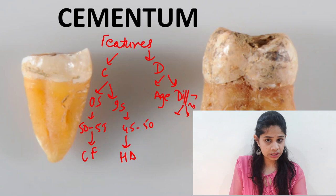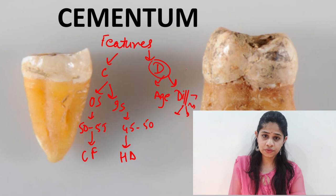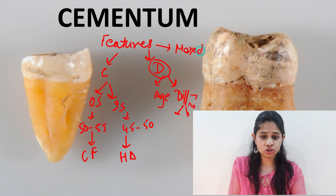The third unique feature of cementum is that it is mesodermal in origin. To understand what we mean by mesodermal, we need to understand the development of the cementum, which comes under the process of cementogenesis.